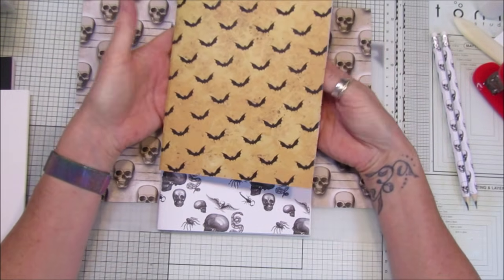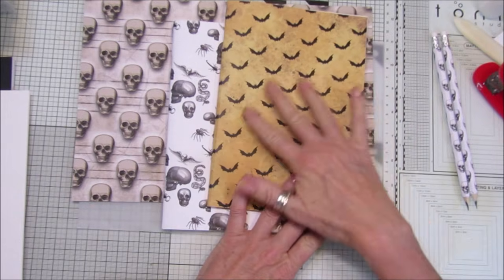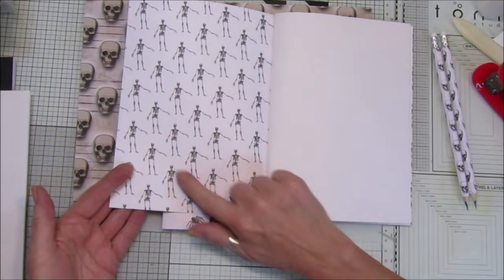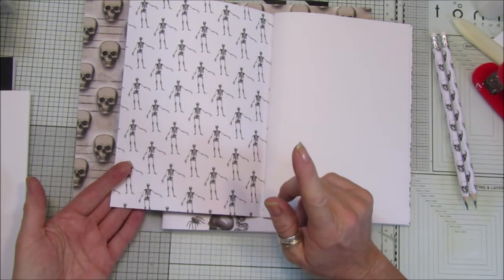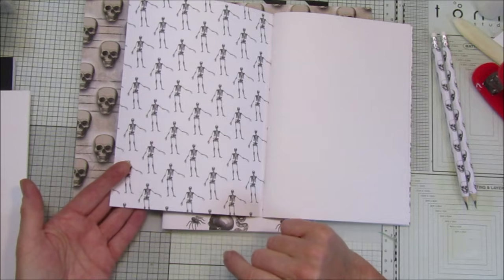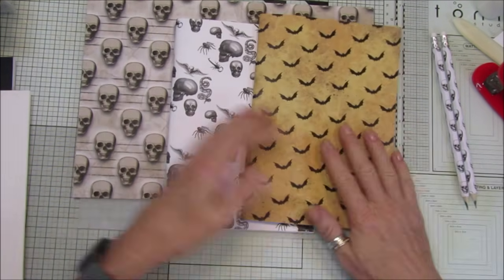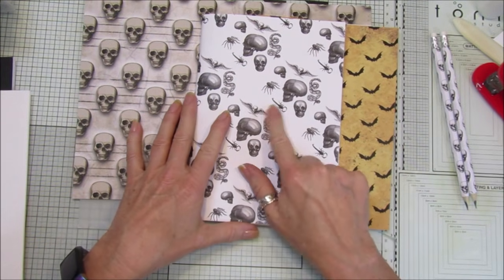I've printed on both sides so we've got the lovely bats on there and then I've got the black and white one. I've got a black and white Halloween set, which is a really easy lovely one. If you've only got a black and white printer, it is absolutely perfect. I've got some skeletons on there.